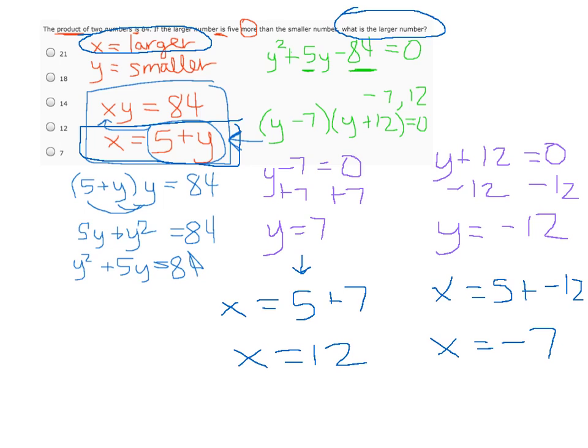Notice that negative 7 is not one of the possible choices, so our final answer would be x equals 12, or d.